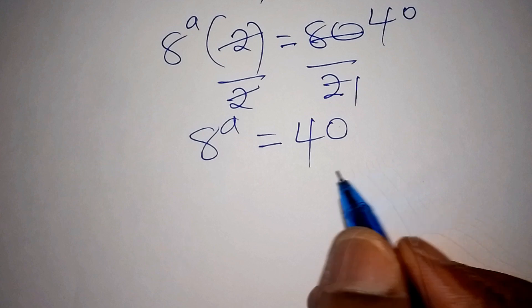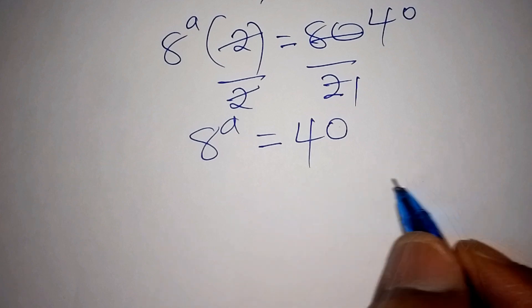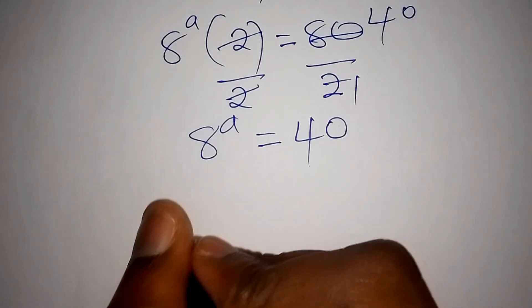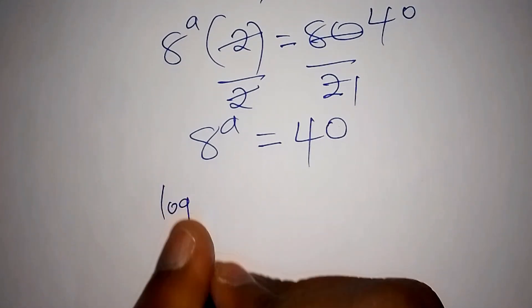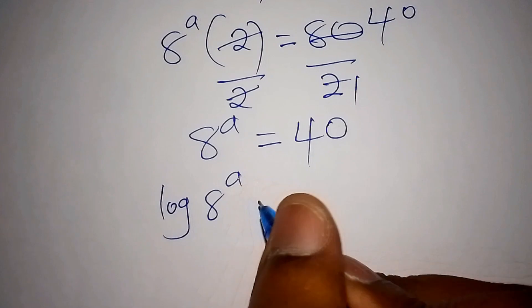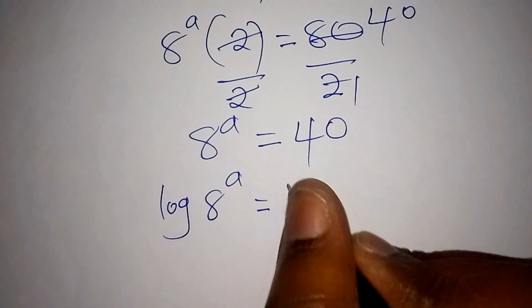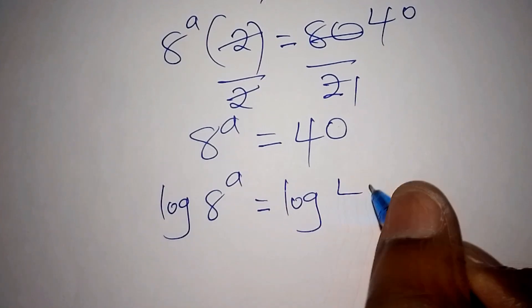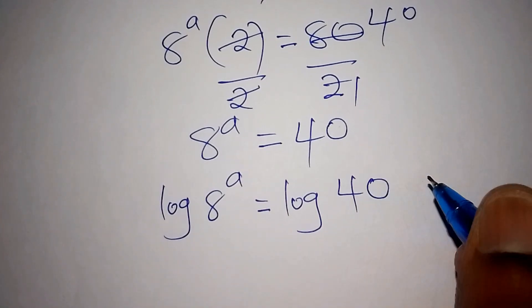We shall now introduce the logarithm on both sides. So here we shall have: log of 8 to the power of A is equals to log of 40.